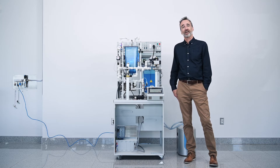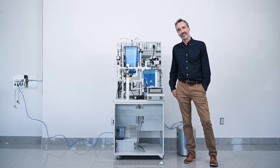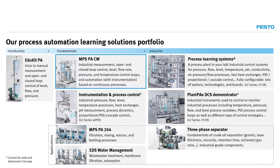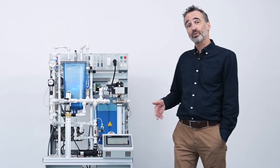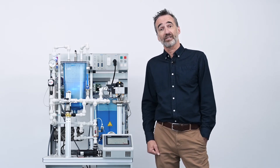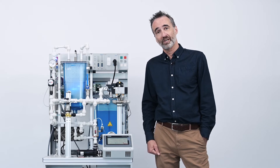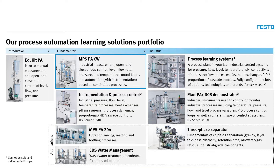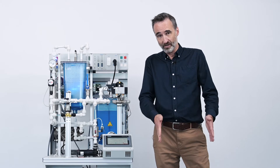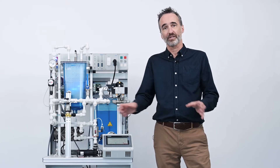At Festo Didactic, we offer a complete portfolio of learning solutions in process automation. You can start by introducing students to the basic concept of process automation using the Educate PA — covering how to measure with a sensor and what a pump is. If you want to go further, you go with the MPSPA Compact Learning Solution. And if you want process automation applications, you can select the MPSPA 204, which includes four different types of stations: the filtration station, the mixing station, the reactor station, and the bottling station. You can work with each station standalone or combine them all together.